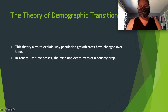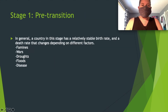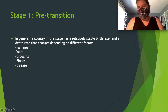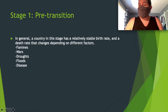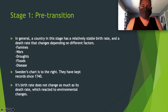In general, as time passes, the birth and death rates of a country drop. Stage one of the demographic transition theory: a country in this stage has a relatively stable birth rate, and the death rate changes depending on various factors — famines, wars, droughts, floods, diseases. If there's war or drought or natural disasters, there's going to be a higher death rate. These changes are contingent upon outside forces.